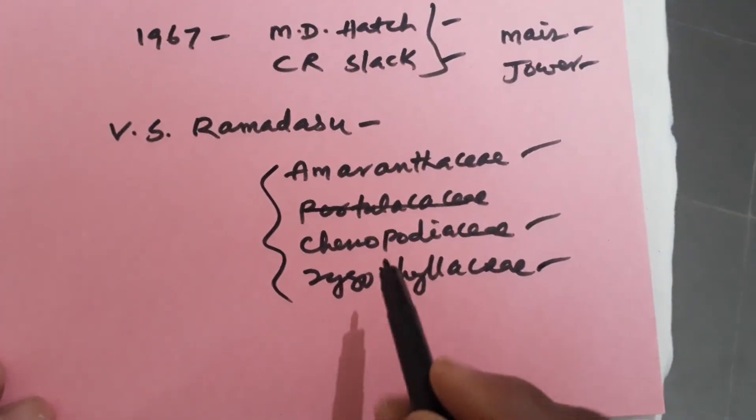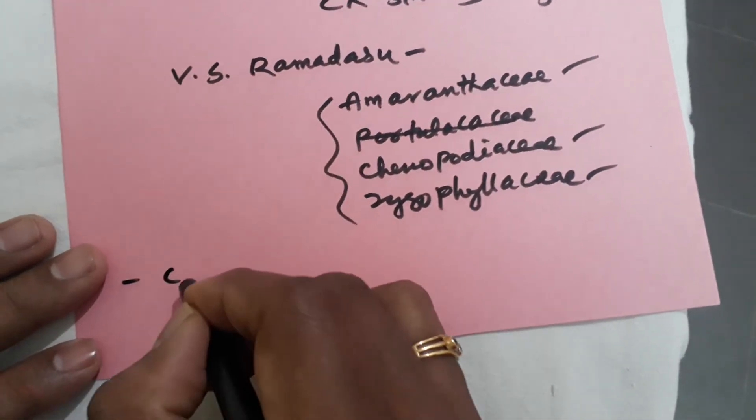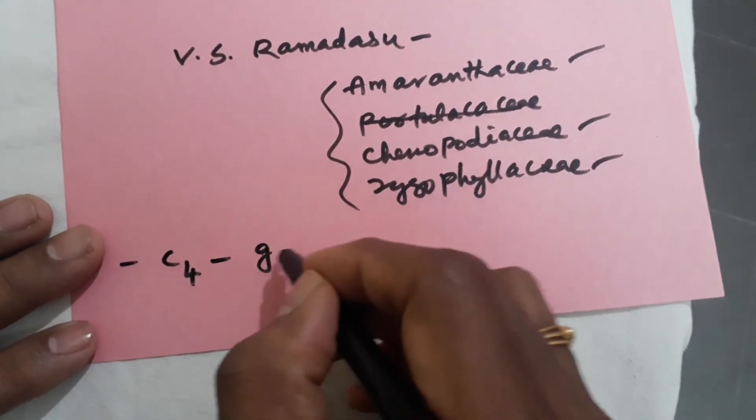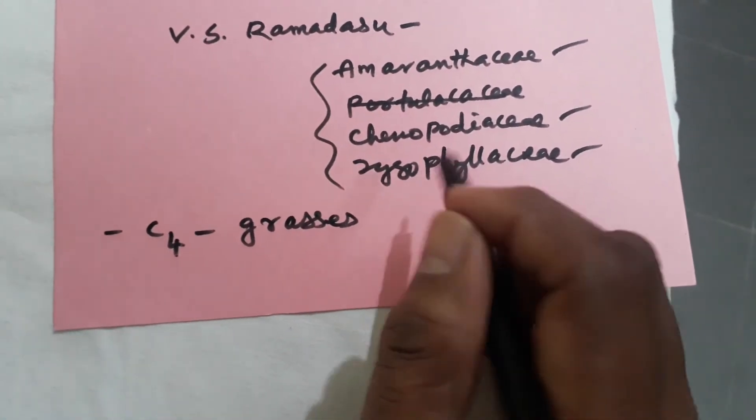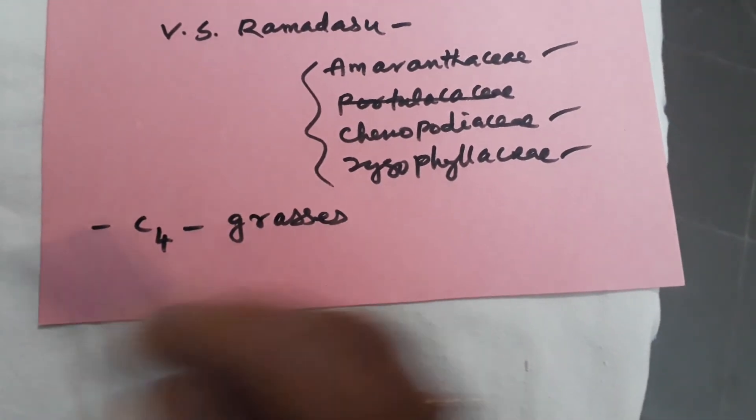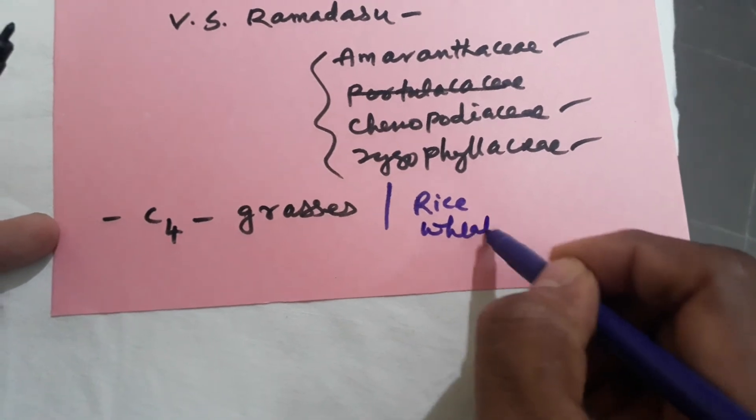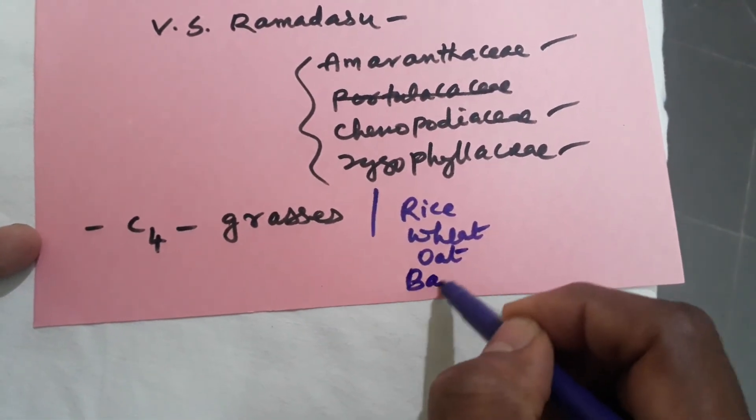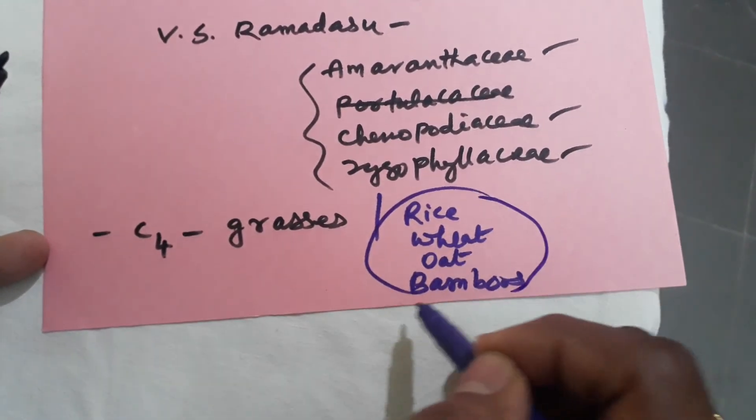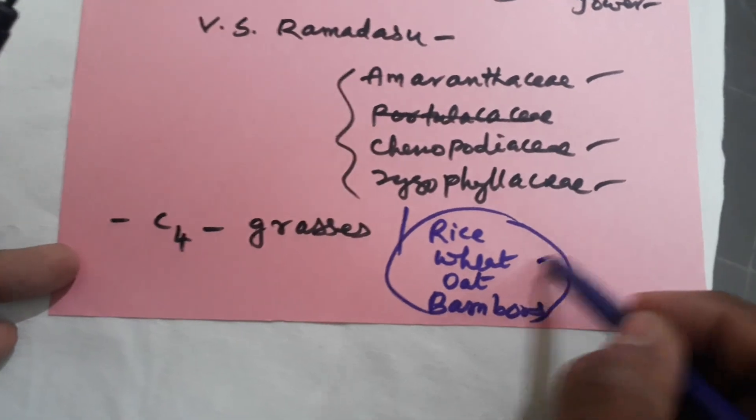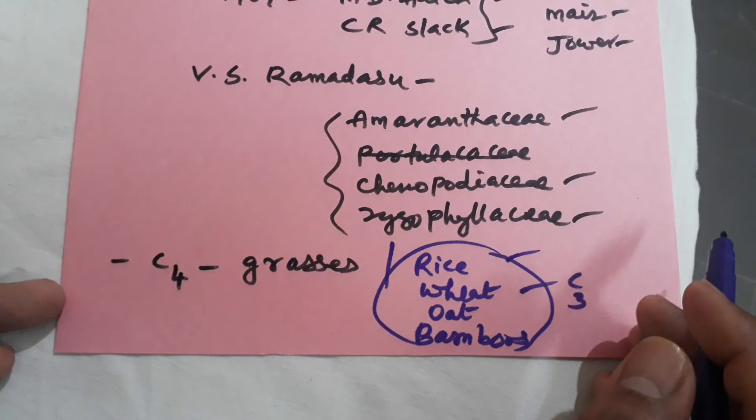Usually, C4 cycle takes place in grasses. One exception case is there: rice plant, wheat plant, oats, and bamboos. These are grasses, but instead of C4, in these plants C3 cycle takes place. It is the exception case. Most of the grasses do C4 pathway.